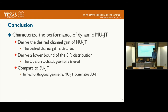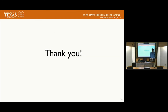Here are our conclusions. In this paper, we characterize the dynamic multi-user joint transmission. Specifically, we derive the desired channel gain and the lower bound of the SIR distribution. We also prove that in near cluster geometry, multi-user joint transmission dominates single joint transmission. Thank you for your attention.